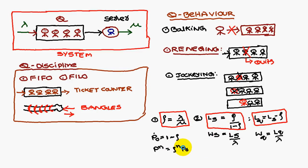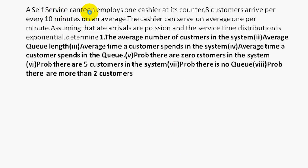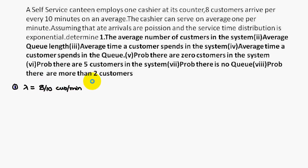Consider this problem: a self-service canteen has one cashier at the counter. Eight customers arrive every 10 minutes on average, so lambda equals 8/10 customers per minute. The cashier can serve one customer per minute, so mu equals 1 customer per minute.